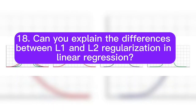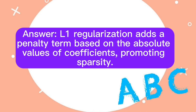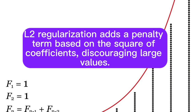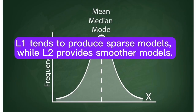Question 18: Can you explain the differences between L1 and L2 regularization in linear regression? Answer: L1 regularization adds a penalty term based on the absolute values of coefficients, promoting sparsity. L2 regularization adds a penalty term based on the square of coefficients, discouraging large values. L1 tends to produce sparse models, while L2 provides smoother models.